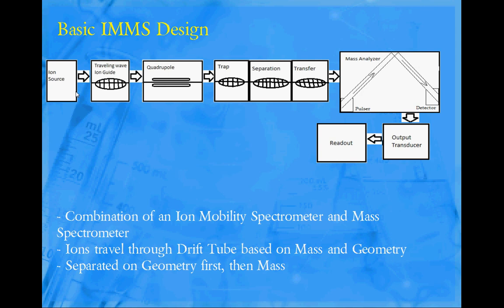The output transducer is going to take the signals received from the detector through a photomultiplier tube and incorporate it into a mass spectrum and overlay it with the ion mobility part. And I will show you an example of that in a little bit.